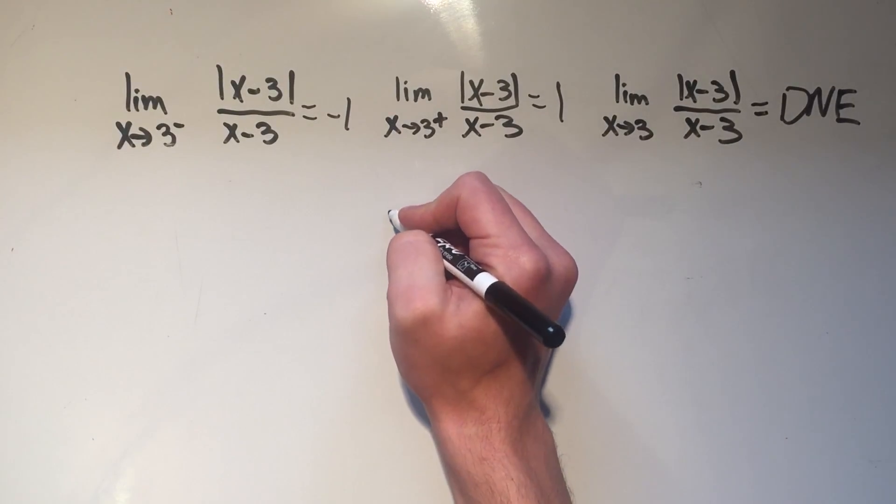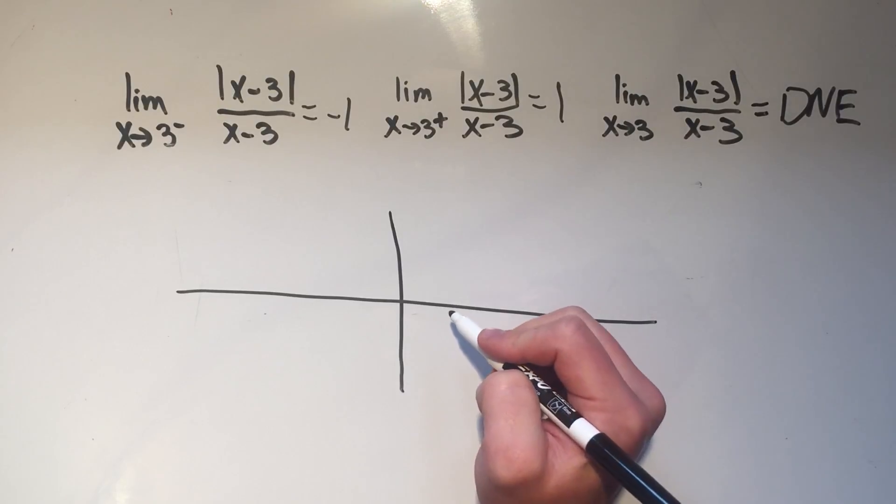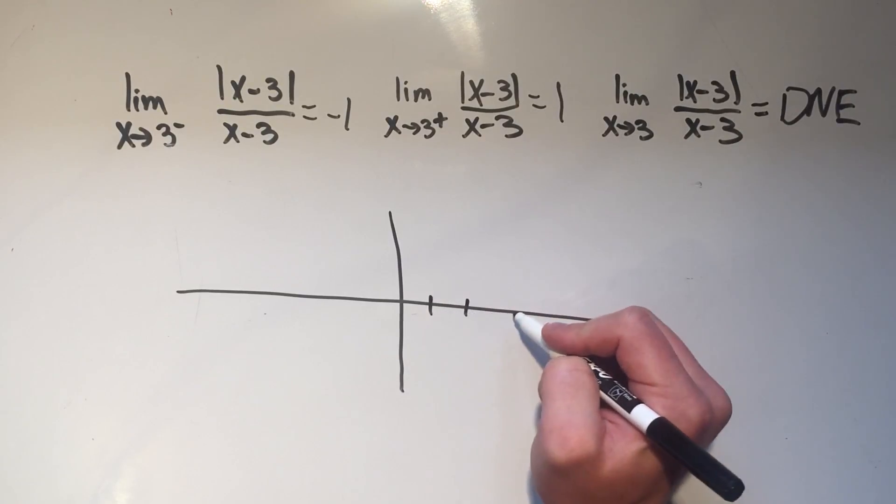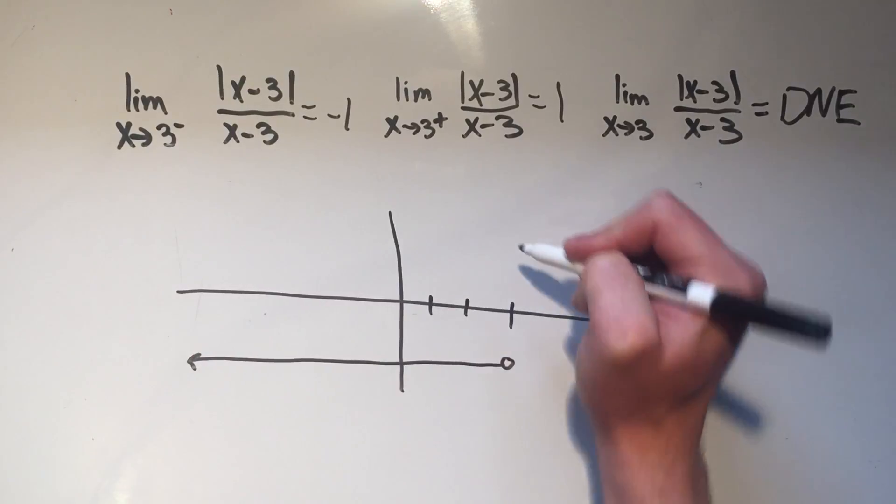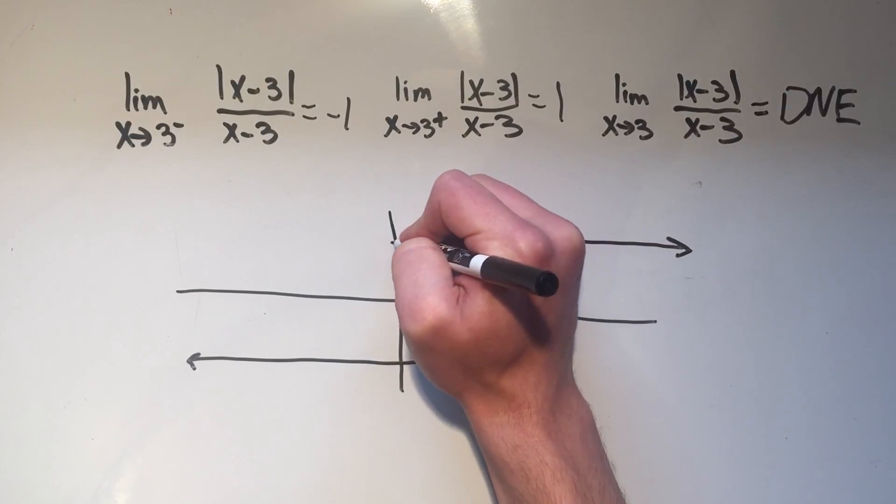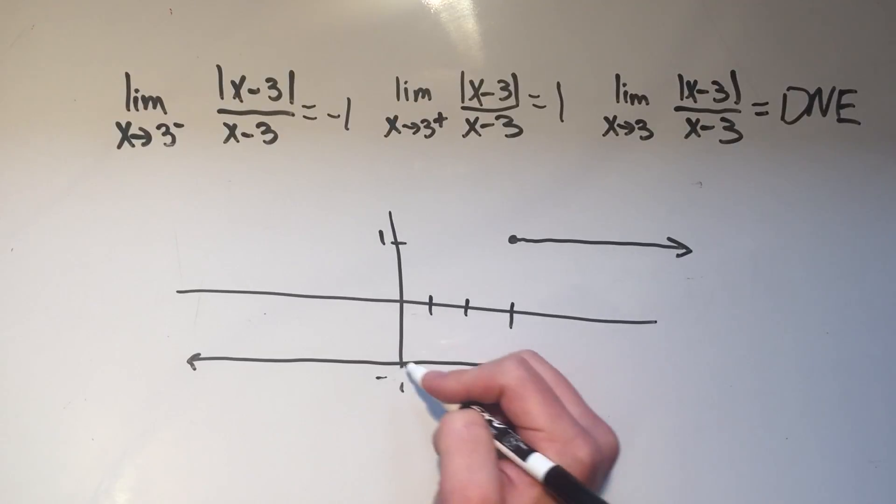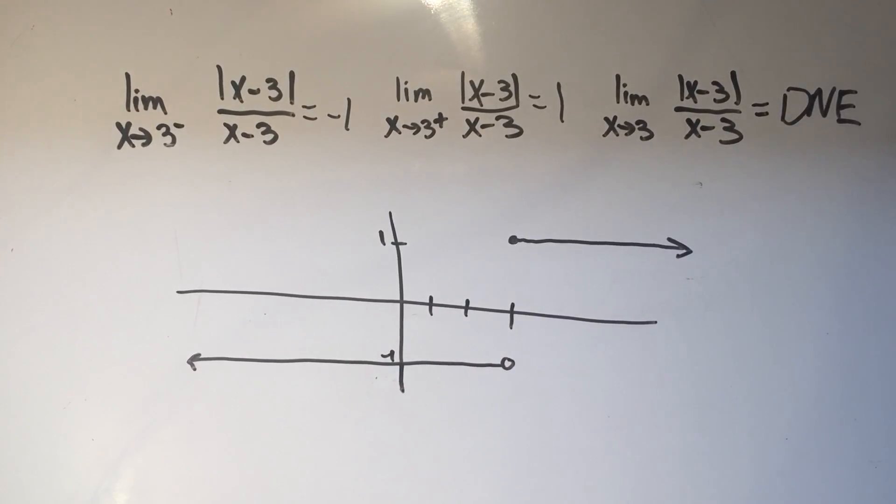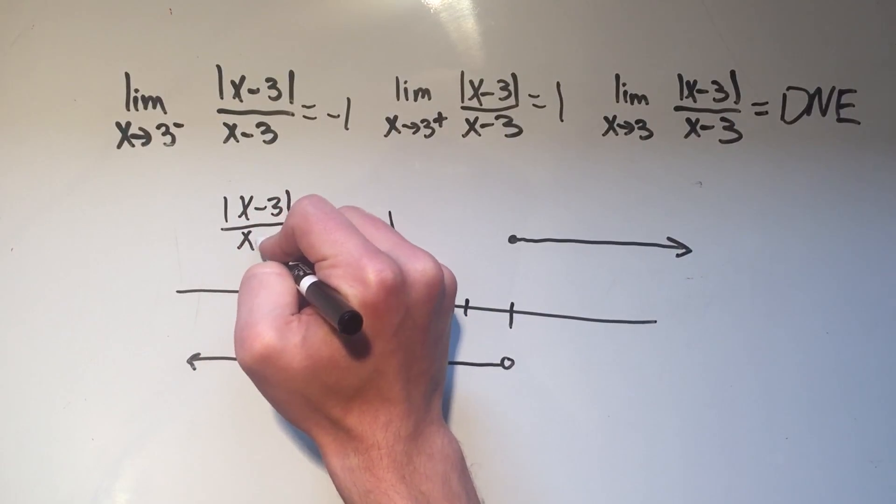And this makes sense. If you graphed the absolute value of x minus 3 over x minus 3, if you had a graphing calculator, which you probably wouldn't be allowed to use in a calculus class, but if you did have one, or if you just wanted to graph it for fun, your calculator or your computer would spit this out. This is the graph of absolute value of x minus 3 over x minus 3.